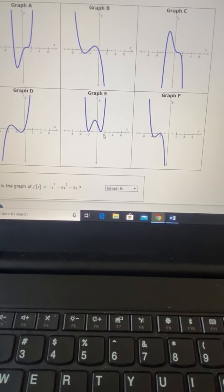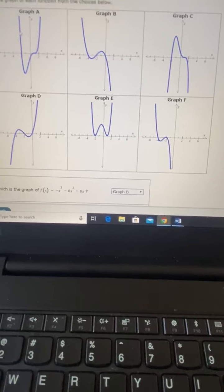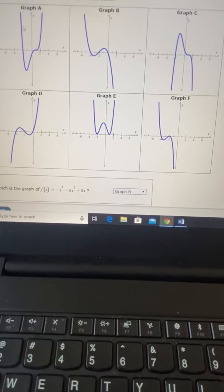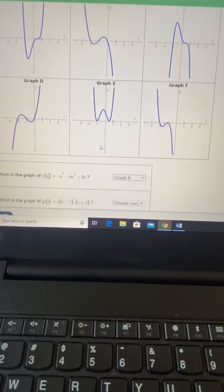So we look at our options here. Again we've got two graphs, graph a and graph e, where we're going up both to the left and the right. So how do we narrow it down?